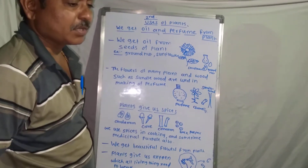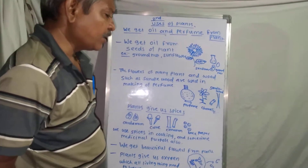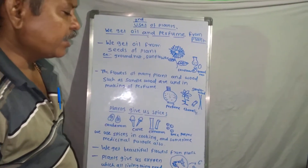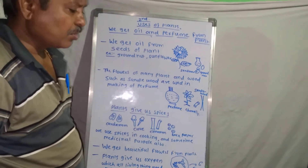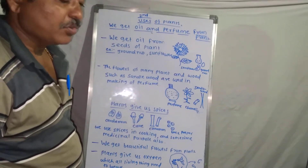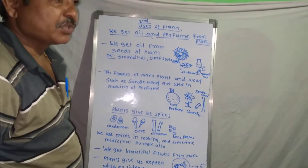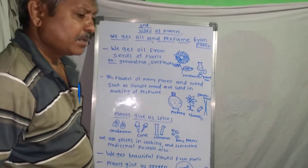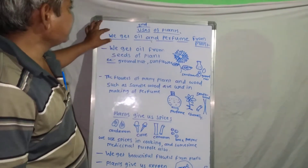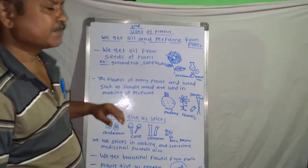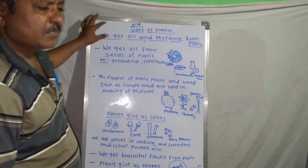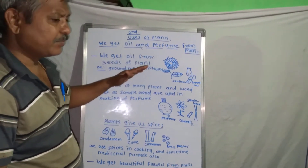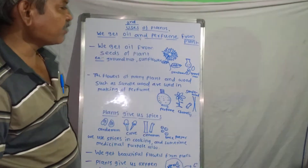We get oil and perfume from plants. In our day-to-day life, when our mummy starts cooking food for us, each and every house needs oil for the preparation of vegetables, chapati, and other dishes. So oil is an important product for our cooking.